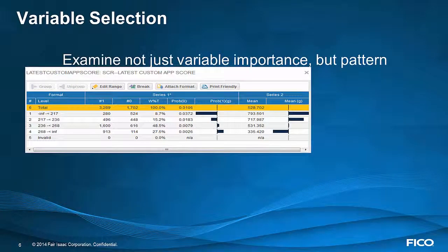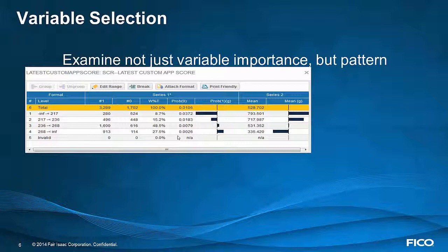In addition to variable importance, it's important to look at the pattern. In this case, we're looking at the latest custom application score. The pattern as it relates to bad rate is that as the score goes up, the bad rate goes down. The pattern as it relates to revenue is that as the score goes up, the revenue goes down. That's not necessarily a desirable pattern as it relates to revenue. It might be interesting to look at the other variables you have available and see if you can find one that's just as predictive, but potentially has a pattern in the right direction.